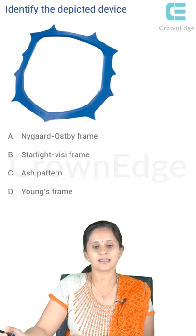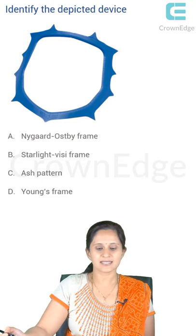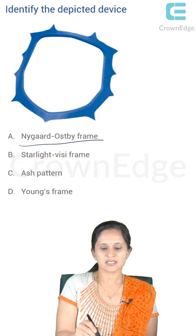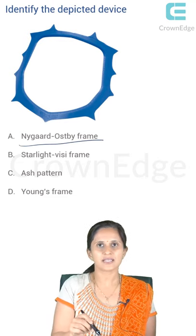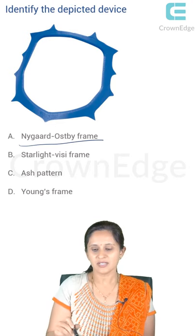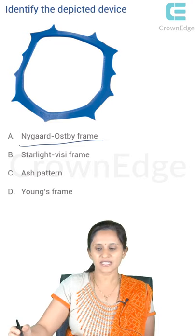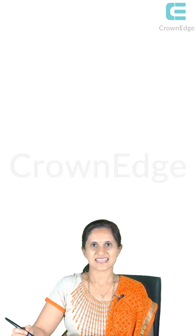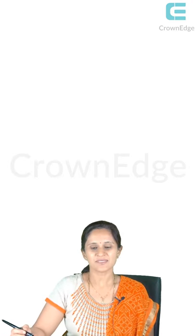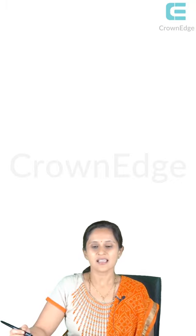Next, identify the depicted device — it is the Nygaard-Ostby frame, a plastic frame that is easily adaptable. Based on its shape, it exerts less tension on the dam.